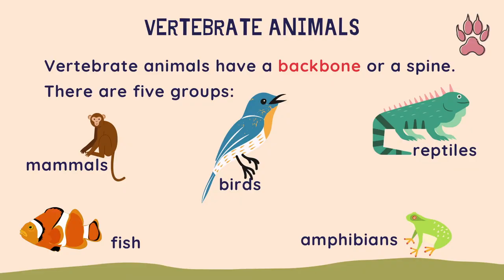Vertebrate animals have a backbone or a spine. There are five different groups: mammals, fish, birds, reptiles and amphibians.